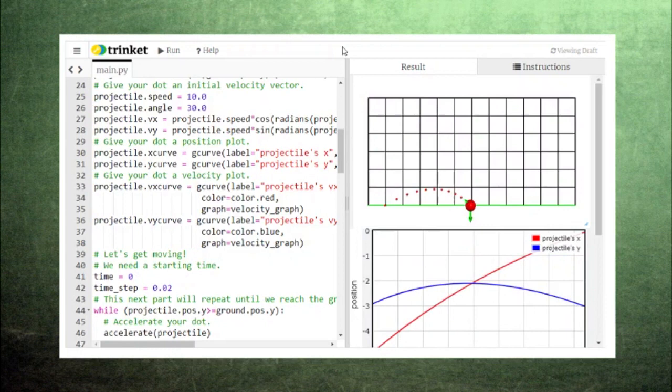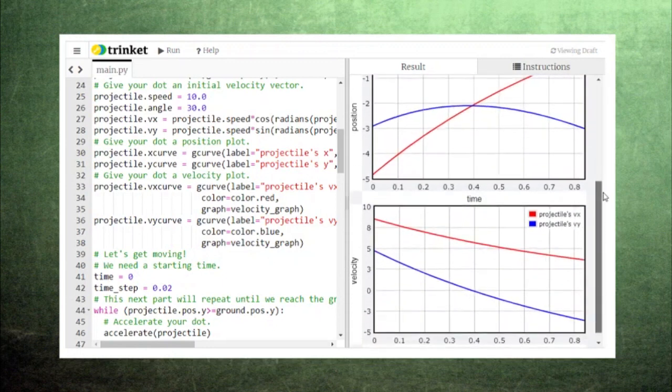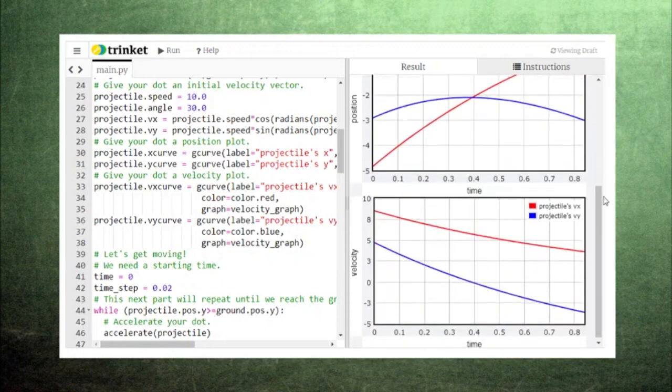Unless we add in air resistance, which always works to slow down the particle. In addition to forces, we can think of a projectile's trajectory in terms of the types of energy present in the system.